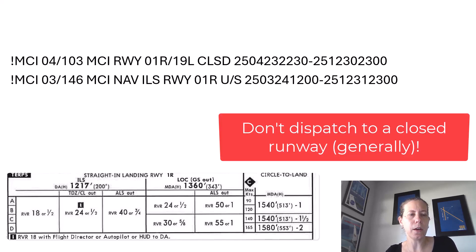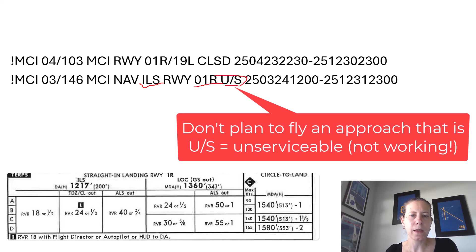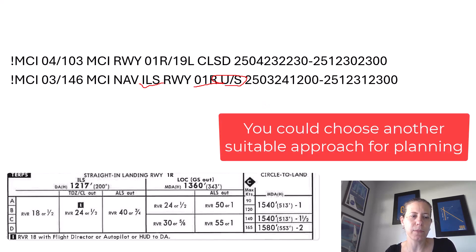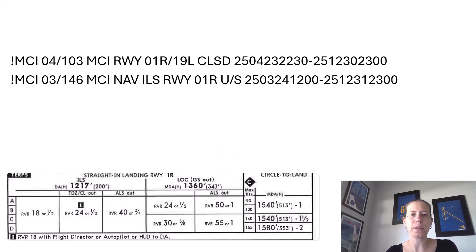The next NOTAM is one I actually found today for Kansas City, except it was for a different runway. But it is also very similar as far as being a no-go for a dispatcher or pilot because it says the ILS to this runway is US — unserviceable, so it's not working. If you check the dates, you'll see that it does apply presently since I'm recording this in June 2025. These would be like no-go NOTAMs, but that's not what I was asked to record about.